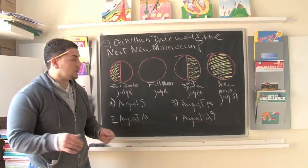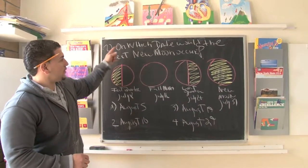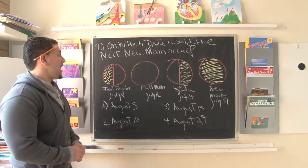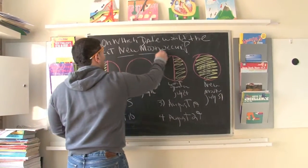You just got to know where to look for the clues. Look what it says. It wants to know on which date will the next new moon occur.